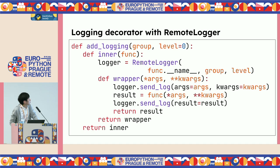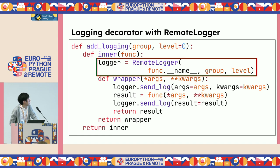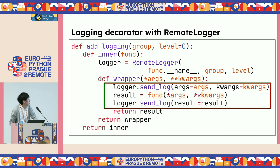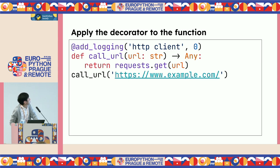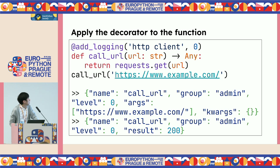Let's apply our RemoteLogger in the decorator. First, instantiate the RemoteLogger as the logger. Call send_log and run the function, and after that send_log again to send the result to the external server. This decorator is named add_logging, applied to the prior example call_url. The decorator runs: send_log, call HTTP, and after that send the result to the external server.